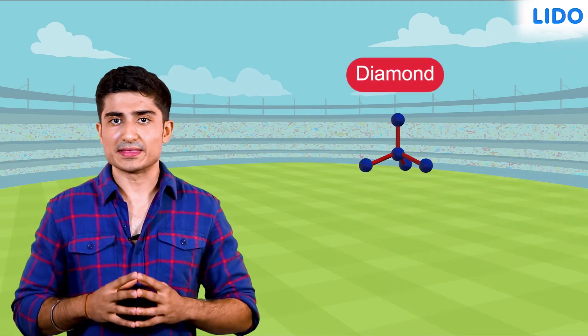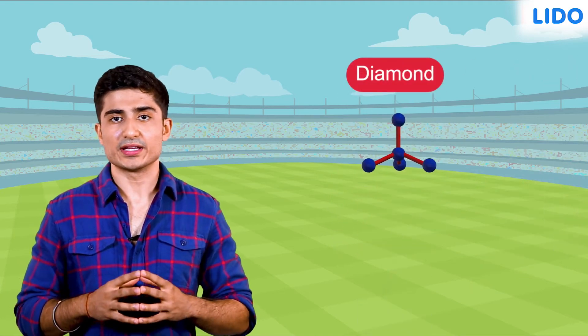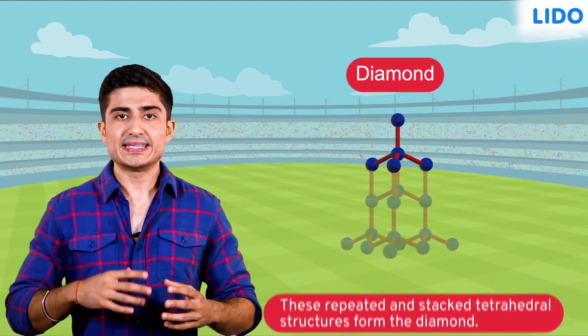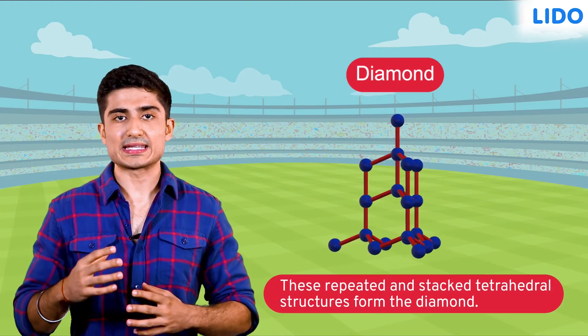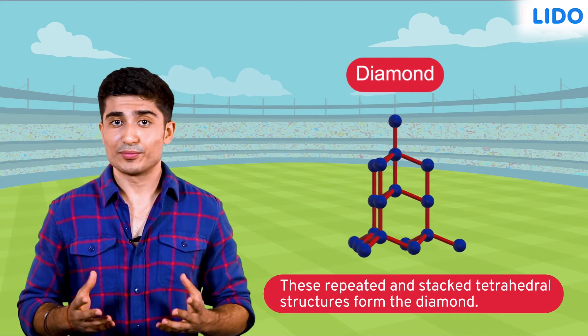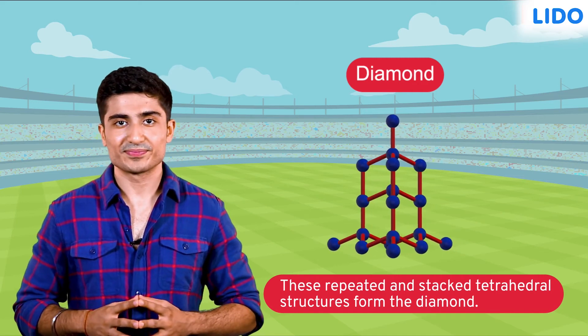In a diamond, the atoms are arranged to form a tetrahedral structure. These repeated and stacked tetrahedral structures form the diamond. Pretty cool, right?